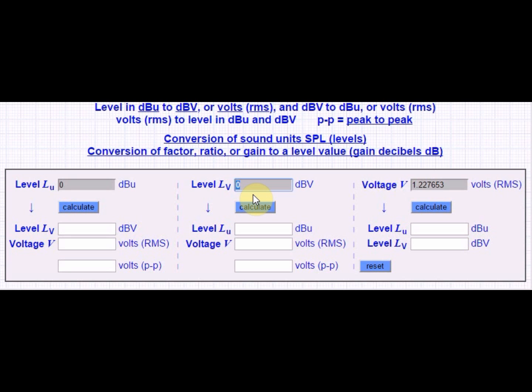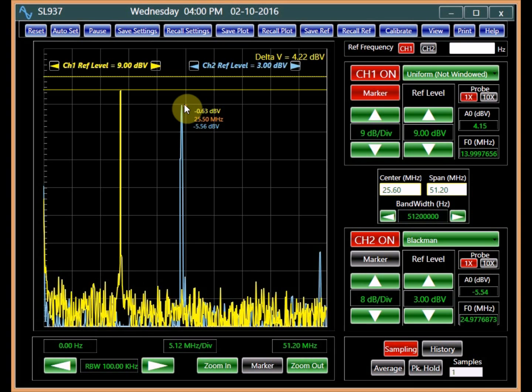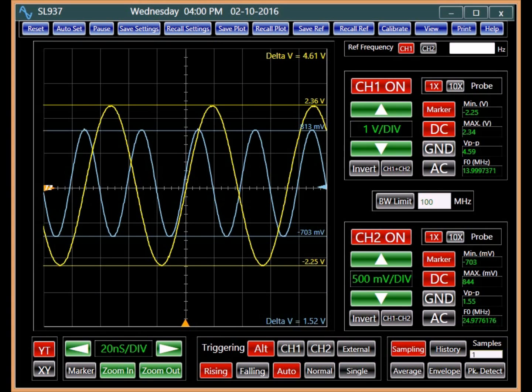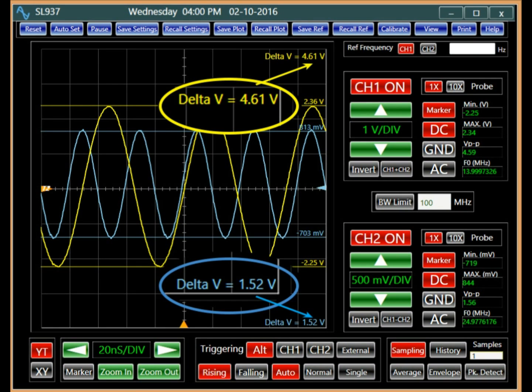We can use an online calculator to convert these values. 4.29 dBV corresponds to 4.63 volts peak to peak, and minus 5.56 dBV to 1.49 volts peak to peak. Let's compare these values to those displayed on the oscilloscope. It displays 4.61 volts peak to peak for the channel 1 signal and 1.52 volts for the channel 2 signal.